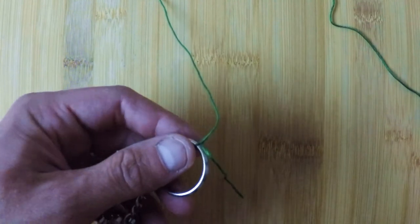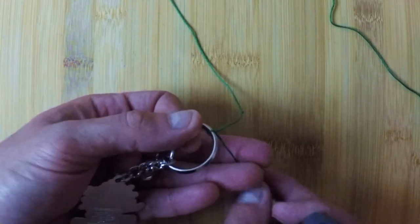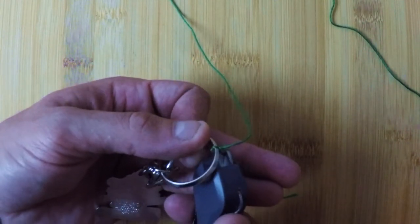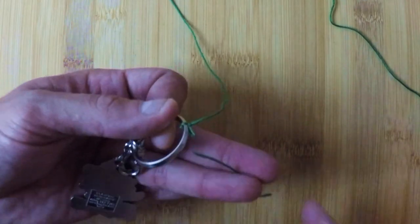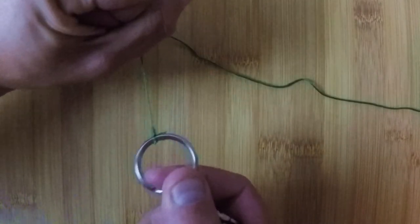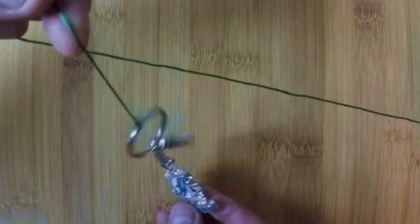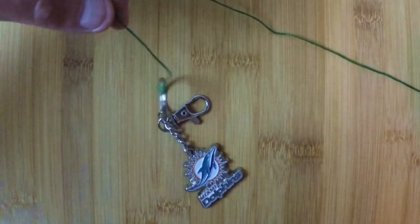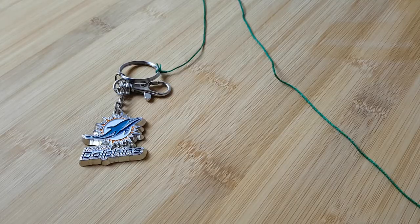I'm going to trim it nice and close. There you go. The more it pulls the stronger it gets, the tighter it gets. That's your basic fishing knot.